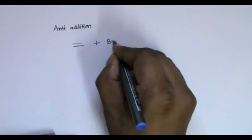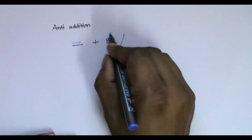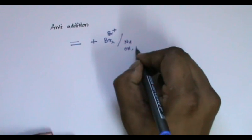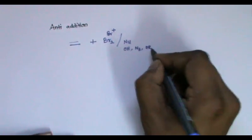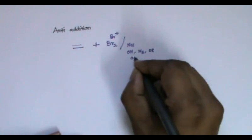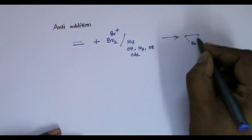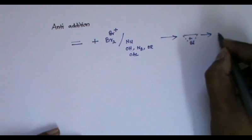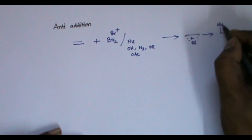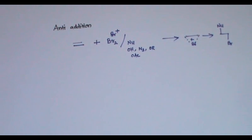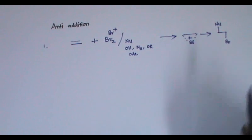There are many reactions under anti addition. The first one is addition of an alkene with bromine, or Br+ and some nucleophile. The nucleophile may be OH (water or acid), alkoxide, acetate, or azide. A bromonium ion intermediate opens up by the nucleophile, and the product — where bromine and the nucleophile (OH, N3, OR, OAcetate) are trans to each other.